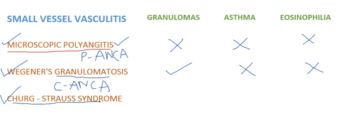Coming to Churg-Strauss syndrome, up to 70% of these patients are associated with P-ANCA. This is also called allergic granulomatosis and angiitis. It has a strong association with granulomas, asthma, and eosinophilia. In Churg-Strauss syndrome, pulmonary and splenic veins and peripheral nerves are frequently involved, with intra- and extra-vascular granulomas and eosinophilic infiltration.